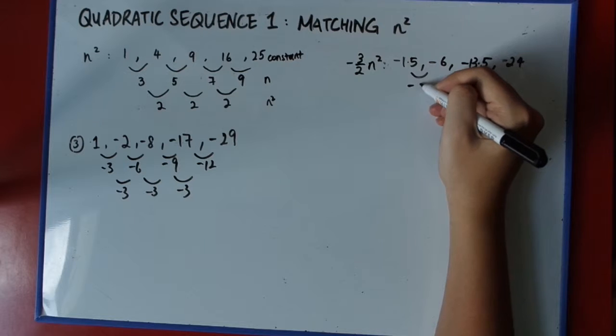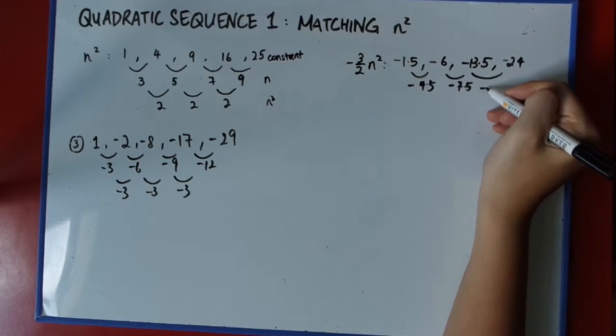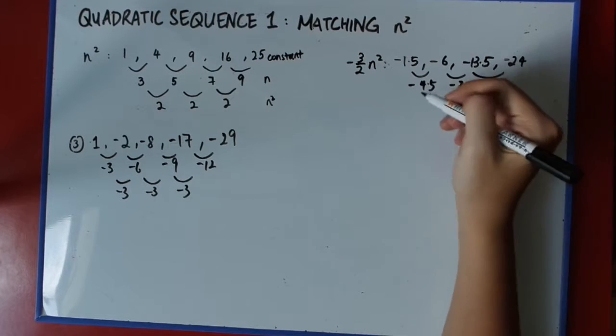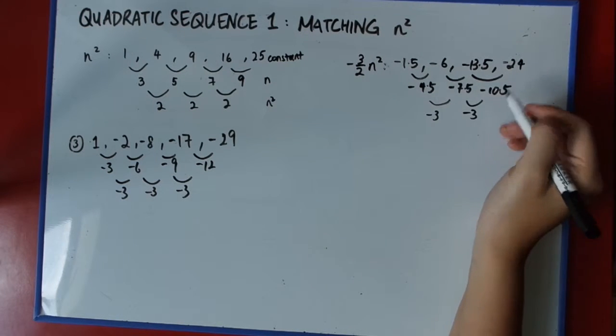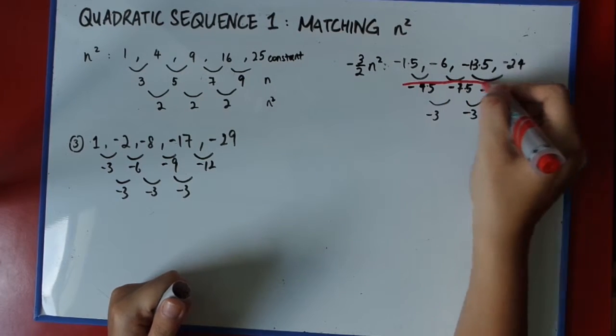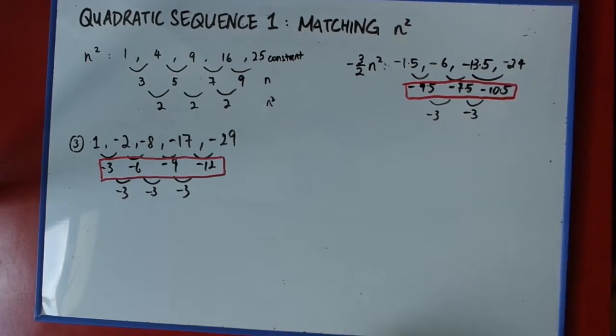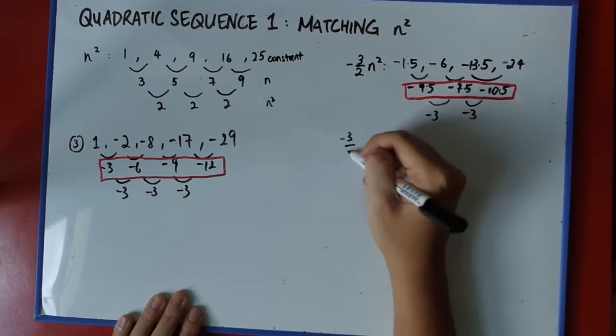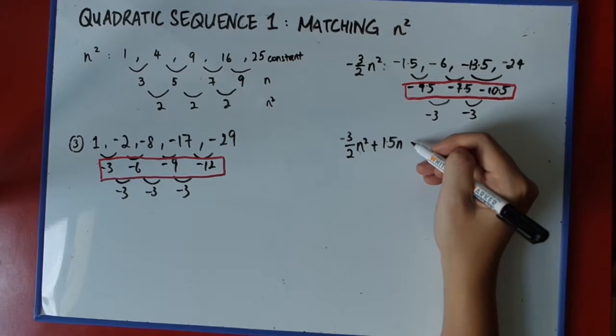So, let me just write this nicely. You should just get minus 3 over 2 n squared. This one might be a little bit trickier if you're doing it with mental calculation, but otherwise, I think it should be okay. Minus 1.5, the next one will be minus 6, minus 13.5. I'm just going to quickly do this one. So here the difference will be minus 4.5, minus 7.5. So this should give me, hopefully, if everything went well, minus 10.5. I'm just not doing the last one because it's not necessary. So minus 3, minus 3. Great. Very nice. We've got it.